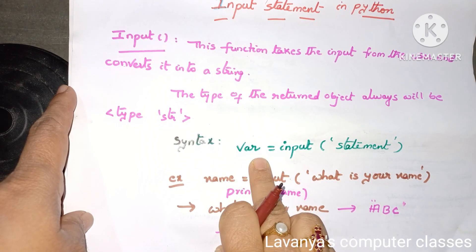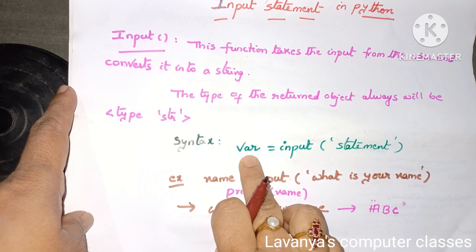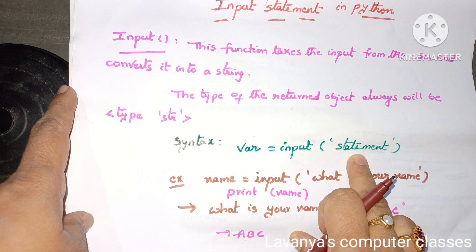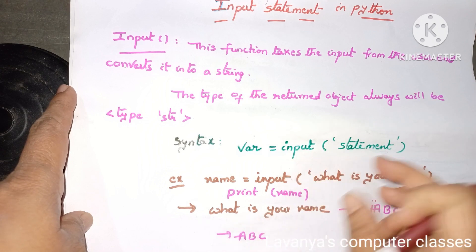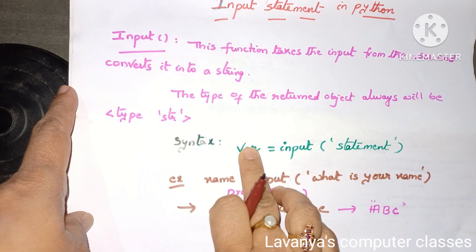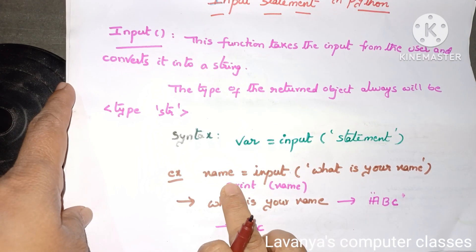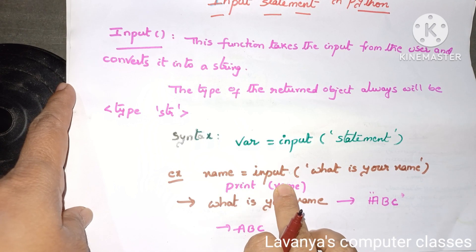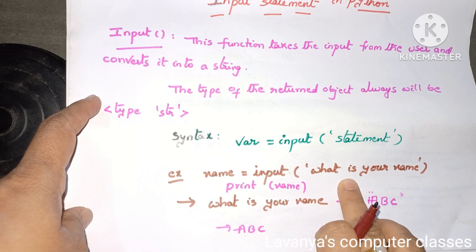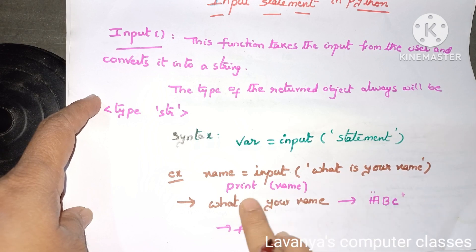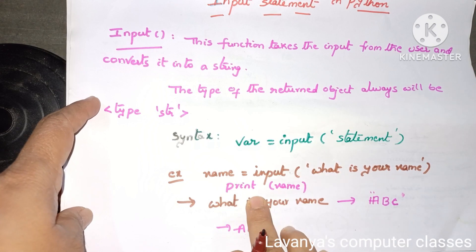The syntax of the input statement is: variable equal to input(). Within the brackets, you write any prompt message. Whatever value is entered in the input function, that value is assigned to the variable. For example, the variable name equals input(), and inside we type the prompt 'What is your name?' Then print name to print the value.